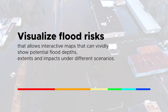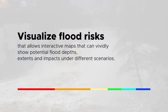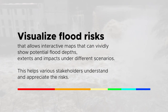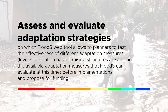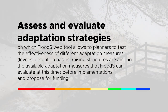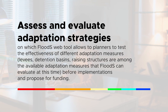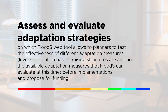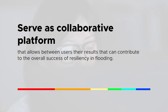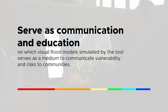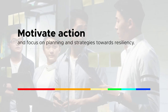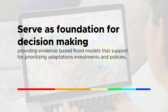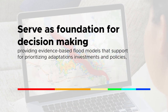Flood S can visualize flood risks through interactive maps that vividly show potential flood depths, extents, and impacts under different scenarios, helping stakeholders understand and appreciate the risks. It can assess and evaluate adaptation strategies — the Flood S web tool allows planners to test the effectiveness of different adaptation measures, including levees, detention basins, and raising structures, before implementation and for funding proposals. It serves as a collaborative platform allowing users to share results, and as a communication and education tool where visual flood models serve as a medium to communicate vulnerability and risks to communities, motivating action and focusing planning toward resiliency. It also serves as the foundation for evidence-based decision-making, supporting the prioritization of adaptations, investments, and policies.